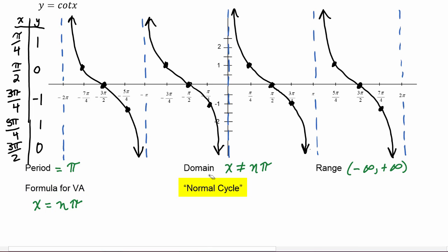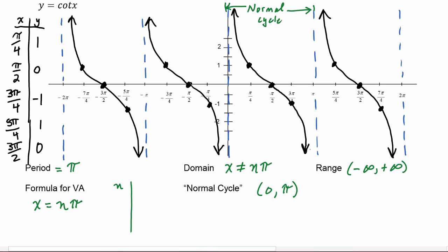The normal cycle for the graph is the piece we pick from zero to pi. To get the vertical asymptotes of the normal cycle, the first asymptote is at zero, so we plug in n equals zero to get x equals zero. To get the asymptote at pi, we plug in n equals one, and we get that asymptote there at pi.